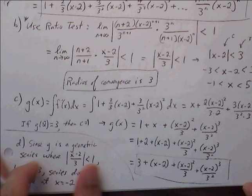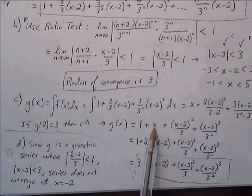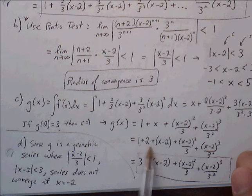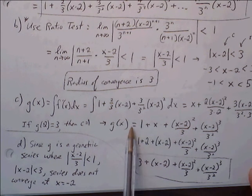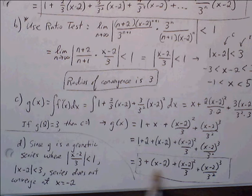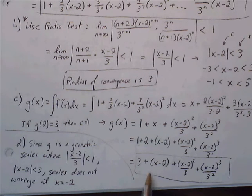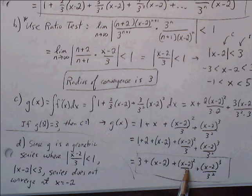To find C, we use G(2) = 3. Plugging x=2, all (x−2) terms vanish, leaving C. But we also have a constant from the first term. Setting 3 = 2 + C (where the 2 comes from f(2)=1 integrated to give initial constant), we get C = 1. Rewriting: 1 + (x−2) + ... We can force the pattern to match by writing 3 + (x−2), since 3·(x−2)/3 = (x−2), making this a geometric series with ratio (x−2)/3.